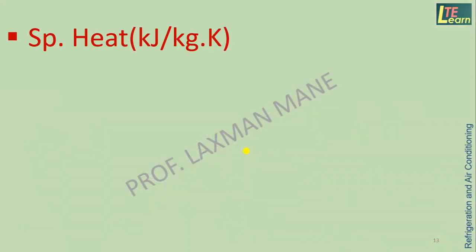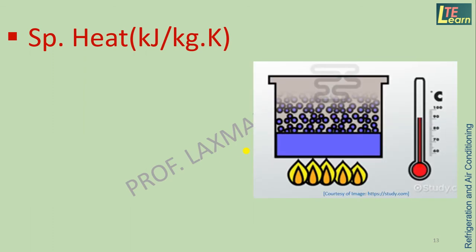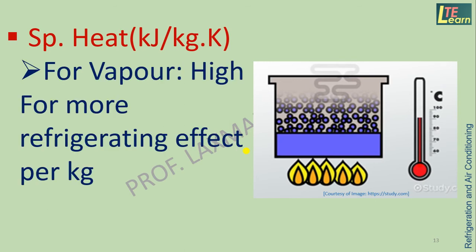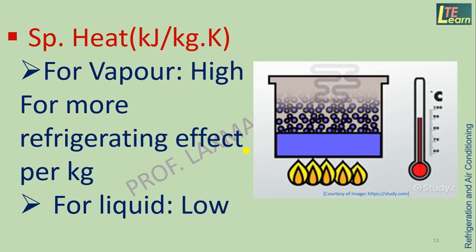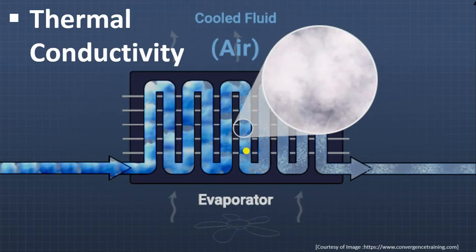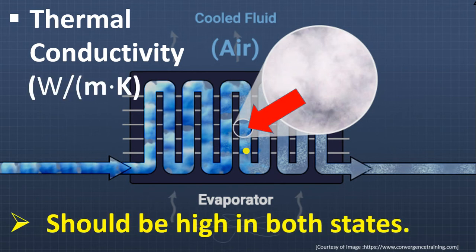Specific heat is the heat-carrying capacity of 1 kg of refrigerant per degree Celsius temperature rise. Specific heat of refrigerant vapor should be high for more refrigerating effect per kg, and it should be low for the liquid refrigerant state. Thermal conductivity — the ability of the refrigerant to carry or convey heat from the evaporator — should be high in both states: vapor and liquid.